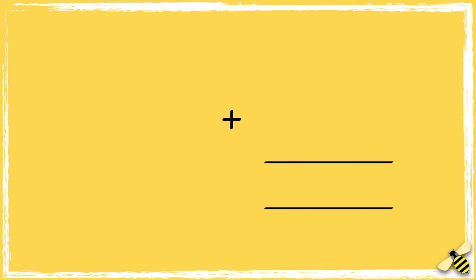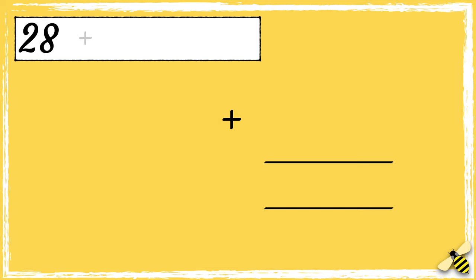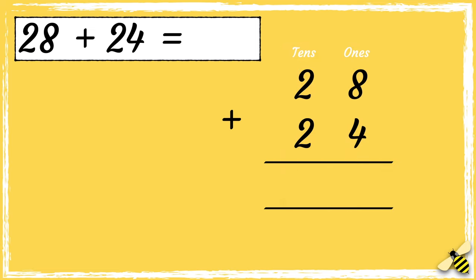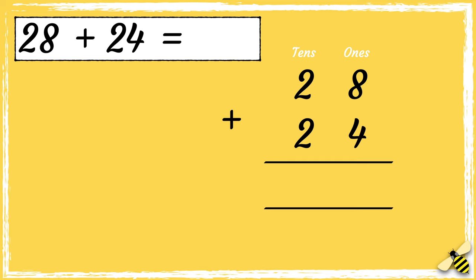Let's have a look at one more example. Here is a number sentence: 28 add 24. Remember to line your numbers up correctly so we have the tens in one column and the ones in another column. Pause the video to give you time to work out the answer, press play when you're done.